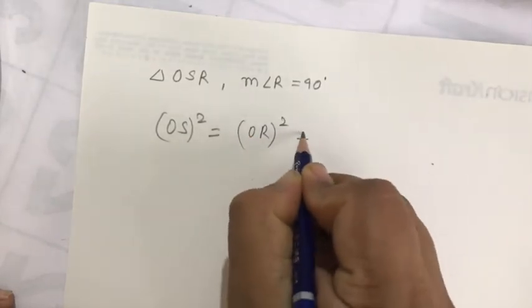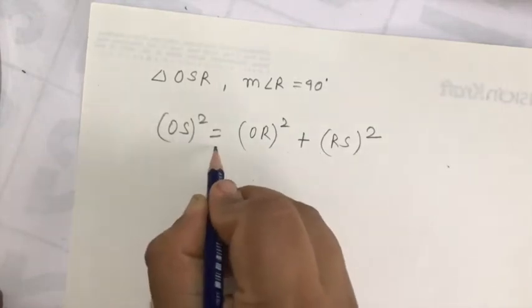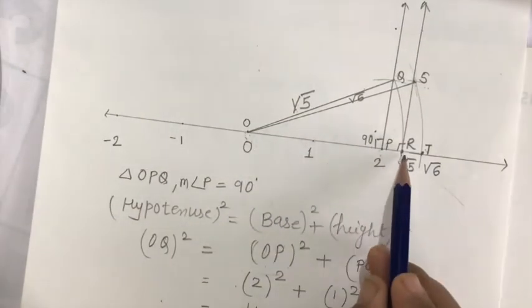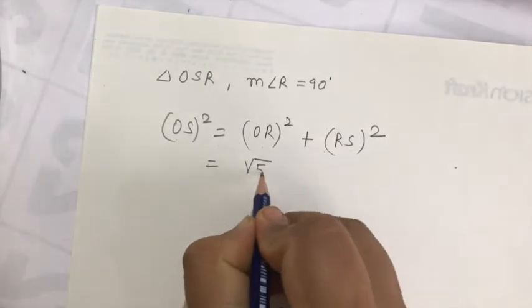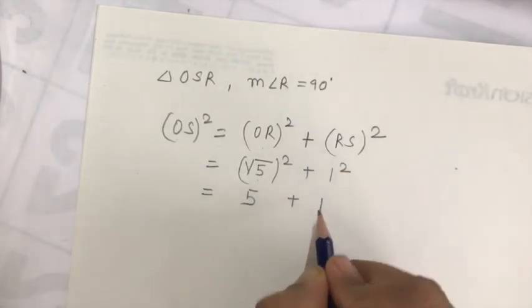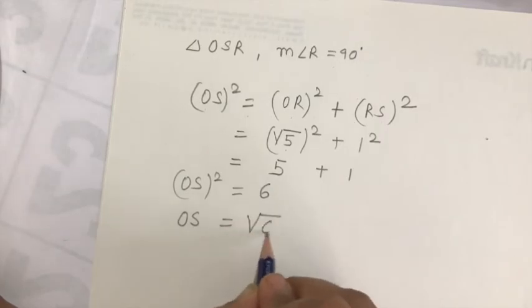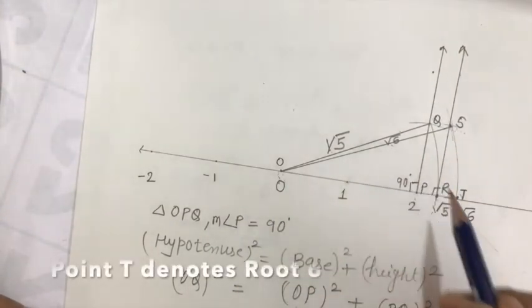OS is the hypotenuse. So OS squared equals base squared plus height squared. The base is OR, so OR squared, plus the height is RS, so RS squared. The distance OR is root 5, and RS is 1 unit distance. So root 5 squared plus 1 squared — root 5 squared is 5, 1 squared is 1, so 5 plus 1 is 6. Therefore OS squared equals 6, and OS equals root 6.